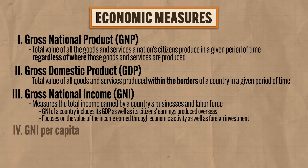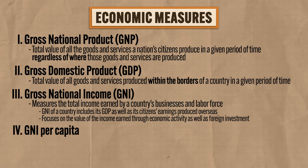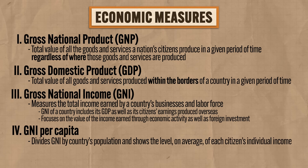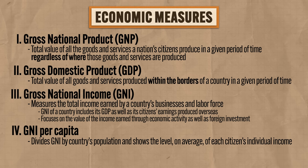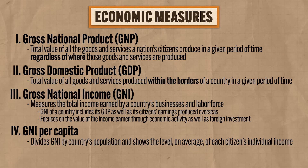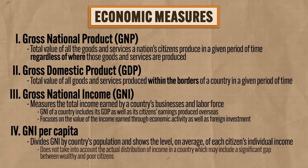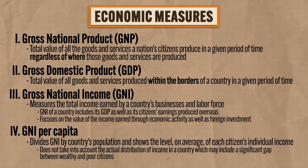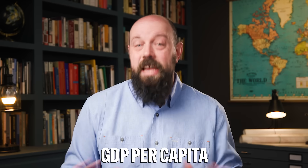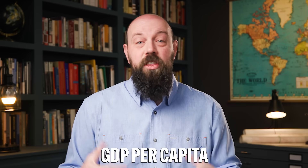Fourth, but related, is GNI per capita. The phrase per capita is a Latin term meaning per person. The GNI per capita divides the GNI by a country's population and shows the average level of each individual citizen's income — it's a way of refining GNI to make it more accurate. However, GNI per capita does not take into account the actual distribution of income in a country, which might include a significant gap between wealthy and poor citizens. You can also apply this per capita breakdown to other measures like GDP per capita.